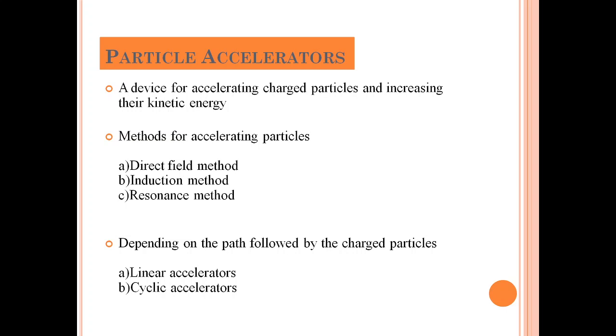Depending on the path followed, the accelerators are classified into linear accelerators and cyclic accelerators. In linear accelerators, the particles follow a straight line path whereas in a cyclic accelerator, they follow a spiral or a circular path.